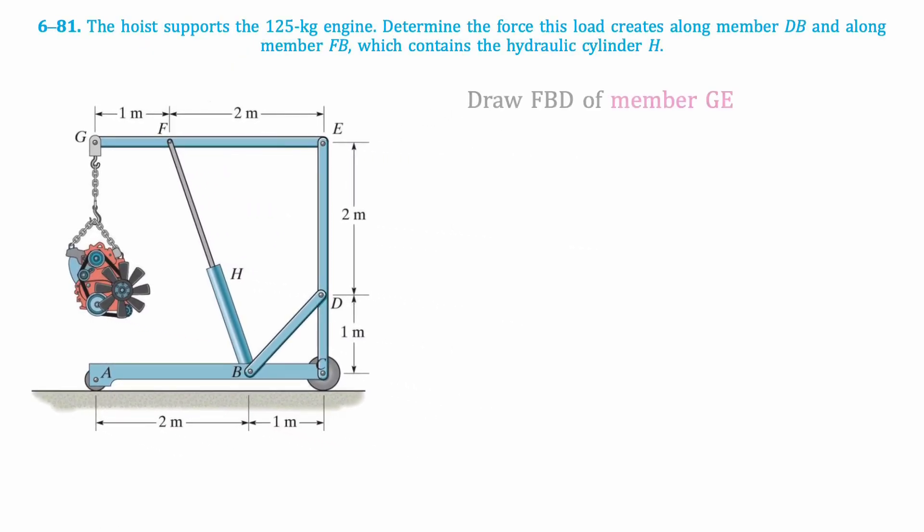First, we'll draw the free body diagram of member GE. Point G supports the engine, so there's a downward force W to represent the weight of the engine. At point F, there is the force acting along member FB. We can split this force into components to make it easier to solve for later on. At E, there is a pin, so we will have X and Y components.